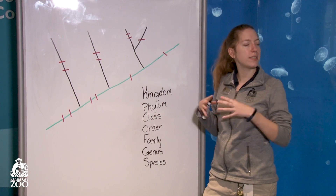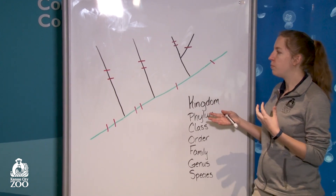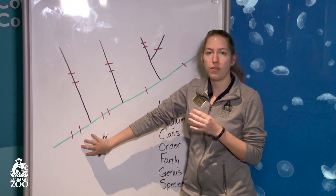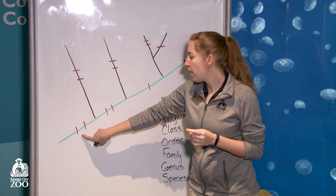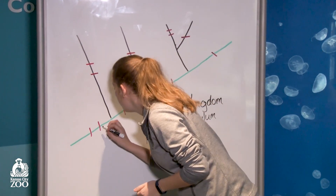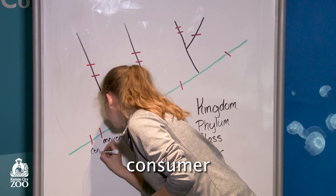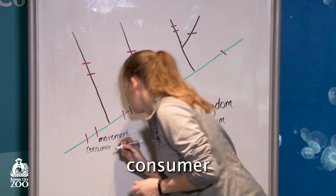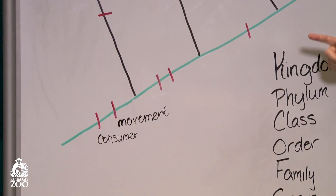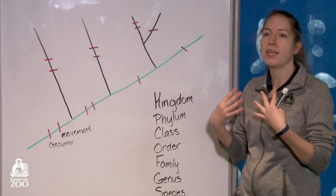All of these hash marks on our tree are characteristics. As we start to group and sort animals, we have to provide a reason why we're putting them in a specific group, and the reason why are those characteristics. We'll start off here and give a couple characteristics to what makes an animal an animal. I'm going to write 'movement' and 'consumer.' Those two characteristics are going to be true for anything else we put on our phylogenetic tree. As an animal, it has to move, and it has to consume — it has to bring in energy.